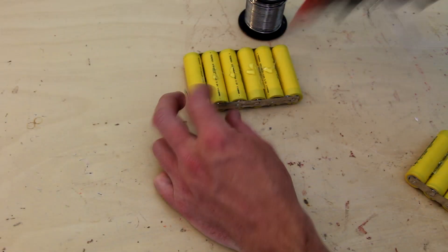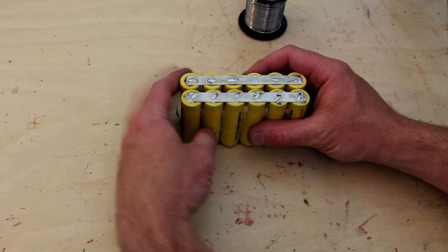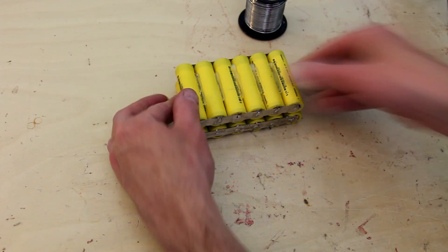The next step is to bond my four sets of six cells together into one solid unit. In order to do this I'm going to start by hot gluing them together to make a brick.